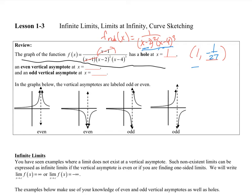Moving on — this one has an even vertical asymptote. This is an even degree polynomial, so at x equal to 2, we have an even degree vertical asymptote. Where do we have an odd one? At x equal to 4. With an odd degree vertical asymptote, one side goes to positive infinity and the other to negative infinity. If it's even, both sides go to the same thing.